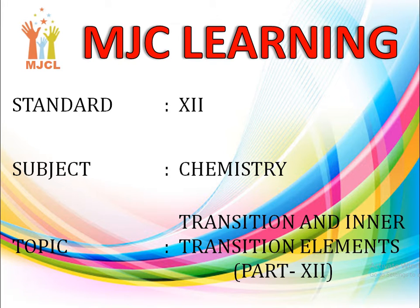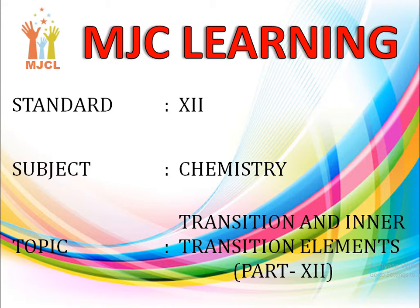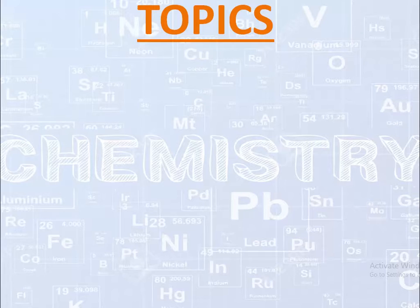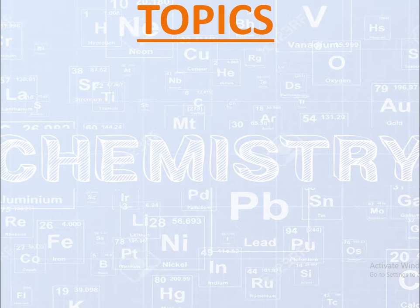Hello students. Welcome back to MJC Learning. We are going to continue our chapter on Transition and Inner Transition Elements of Chemistry. This is part 12 of this chapter. We have already studied the compound of manganese, KMnO₄, also known as potassium permanganate.